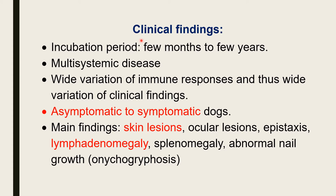In this presentation we will see clinical findings. The incubation period varies very widely from few months to few years, and that is because of the various immunological responses by various dogs. Canine leishmaniosis is a multi-systemic disease since it involves many systems. The disease shows wide variation of immune responses and thus wide variation of clinical findings, wide variation in severity and duration of disease. The dog may be asymptomatic to severely symptomatic.